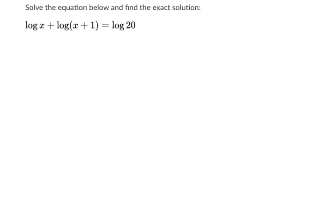Okay, so let's just solve the equation below and find the exact solution. That's exciting, right? We've got logarithms with variables, and here I see a plus of two logarithms, and that could be rewritten as the log of x times x plus one, and that's got to be equal to the log of 20.